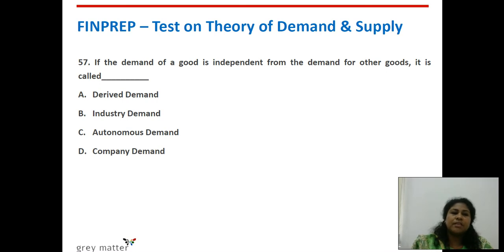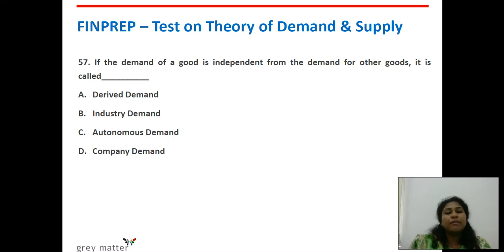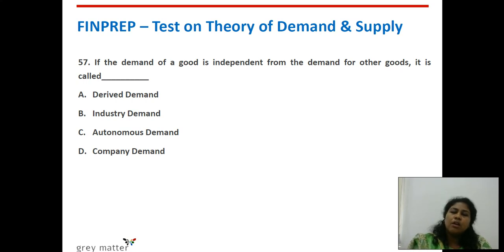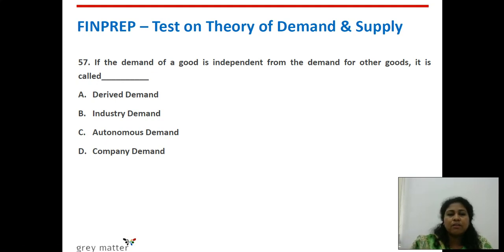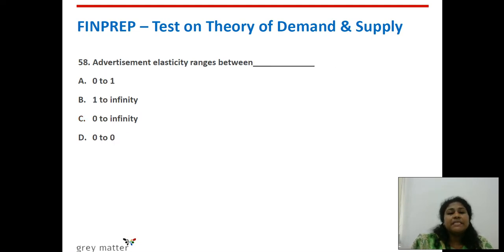Fifty-seventh question: if the demand of a good is independent from the demand for other goods, what is it called? Demand for health services creates demand for doctors; demand for education increases demand for teachers — those are derived demand. But when demand for a commodity does not depend on the demand of some other commodity, they are called autonomous demand. Autonomous means independent.